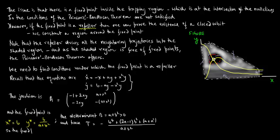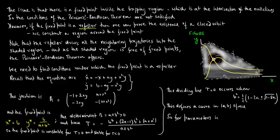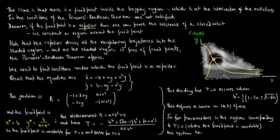The fixed point is in fact unstable for τ greater than 0, and will be stable for τ less than 0. The dividing line τ equals 0 occurs when B² equals one-half times (1 minus 2A plus or minus square root of 1 minus 8A), and this defines a curve in the A-B parameter space. So for parameters in the region corresponding to τ greater than 0, where the fixed point is unstable, the system has a closed orbit.